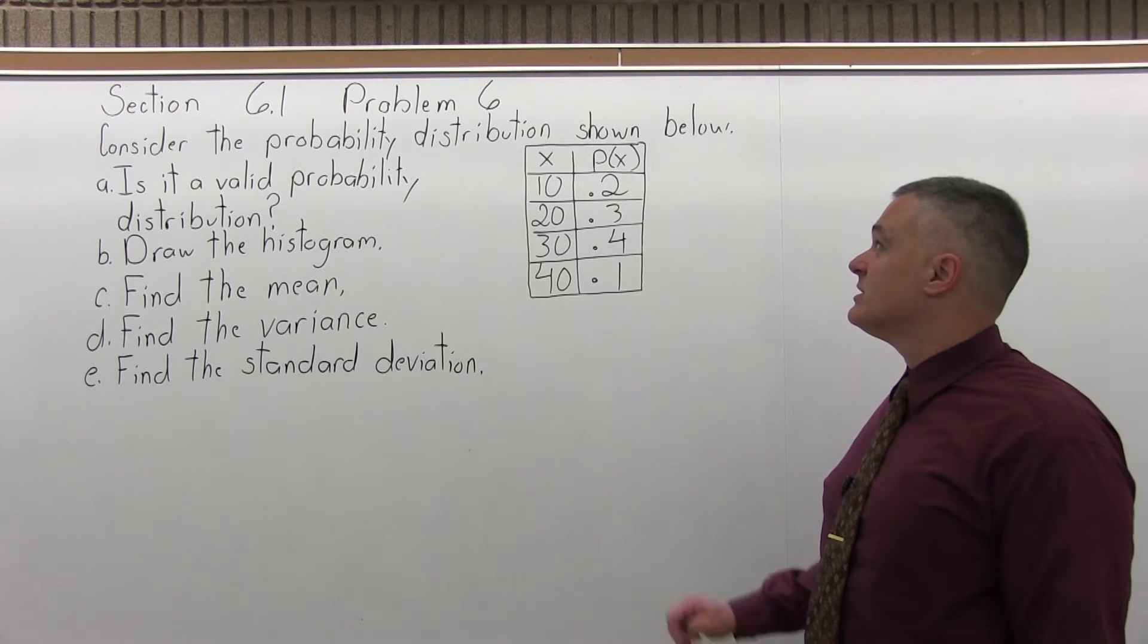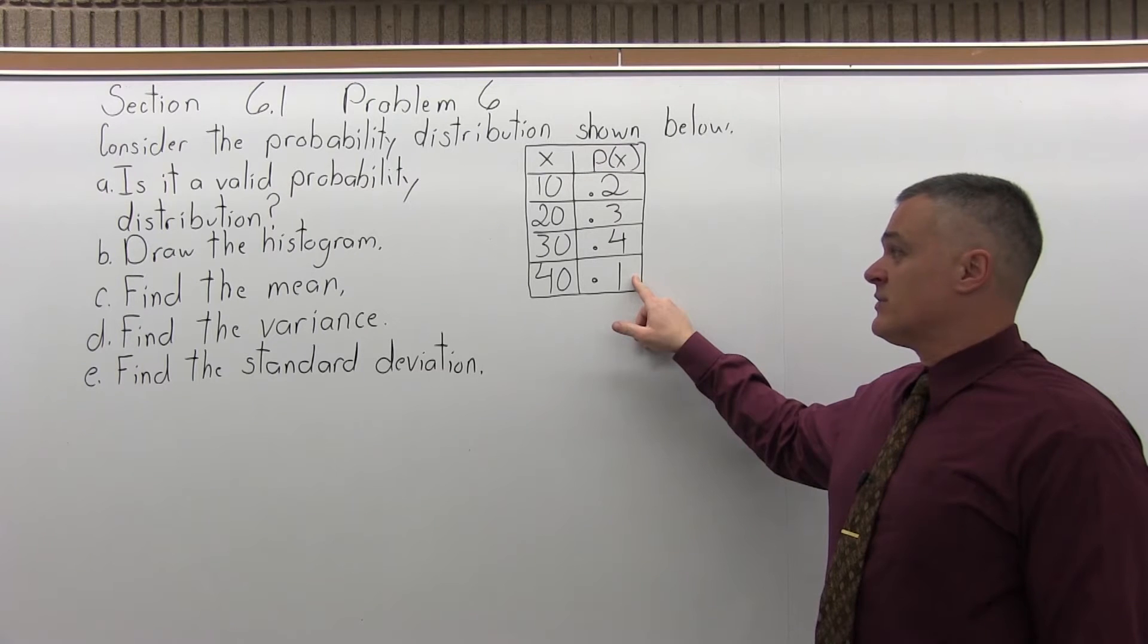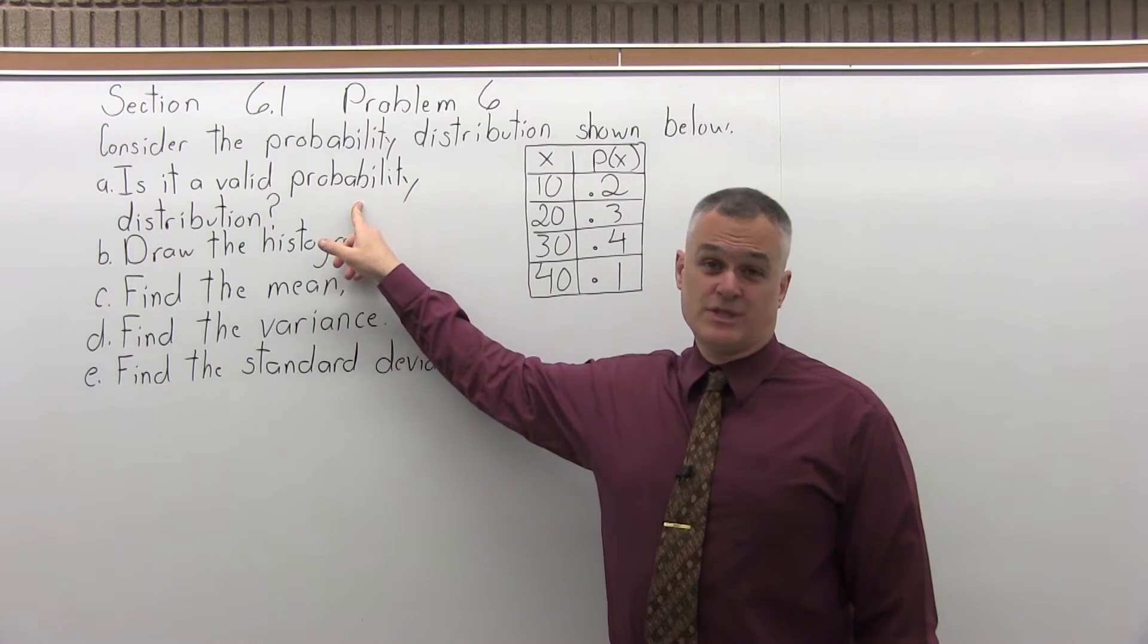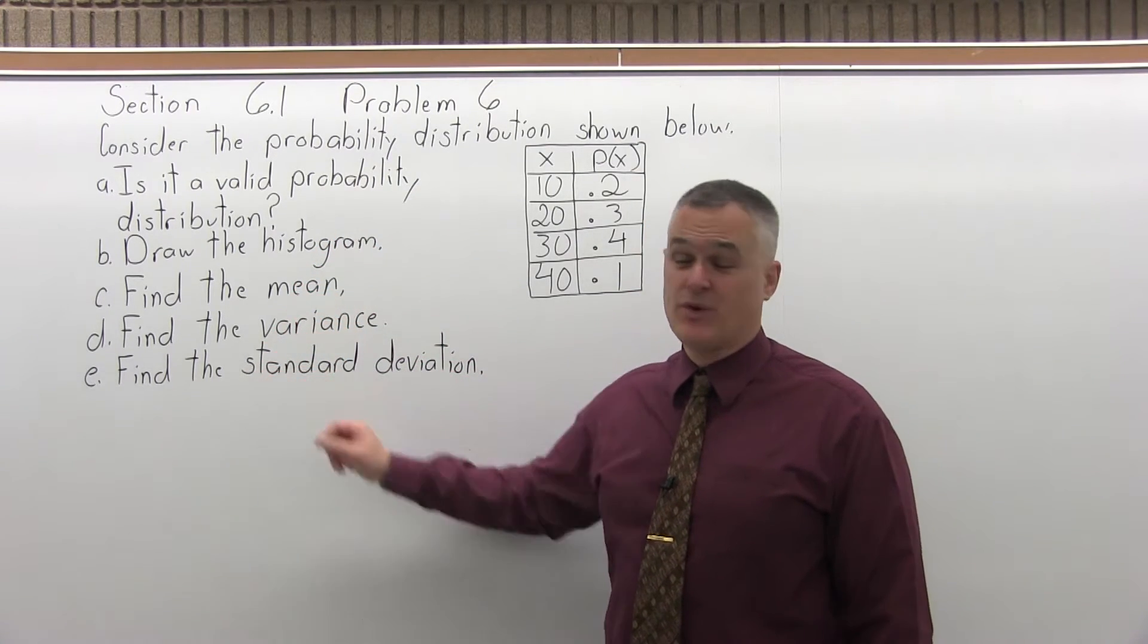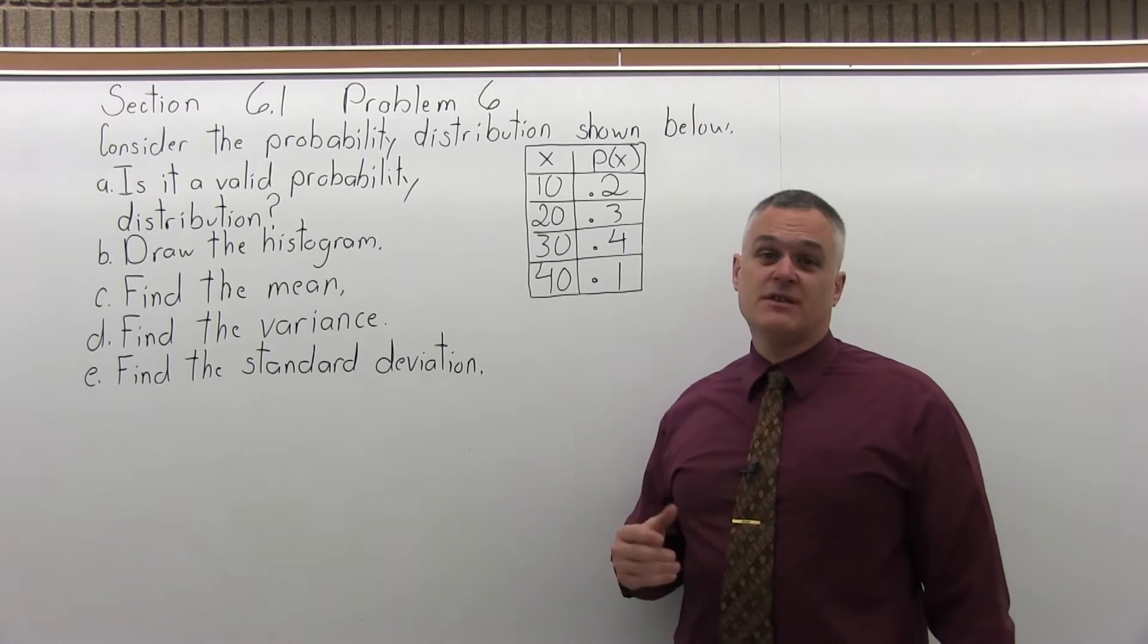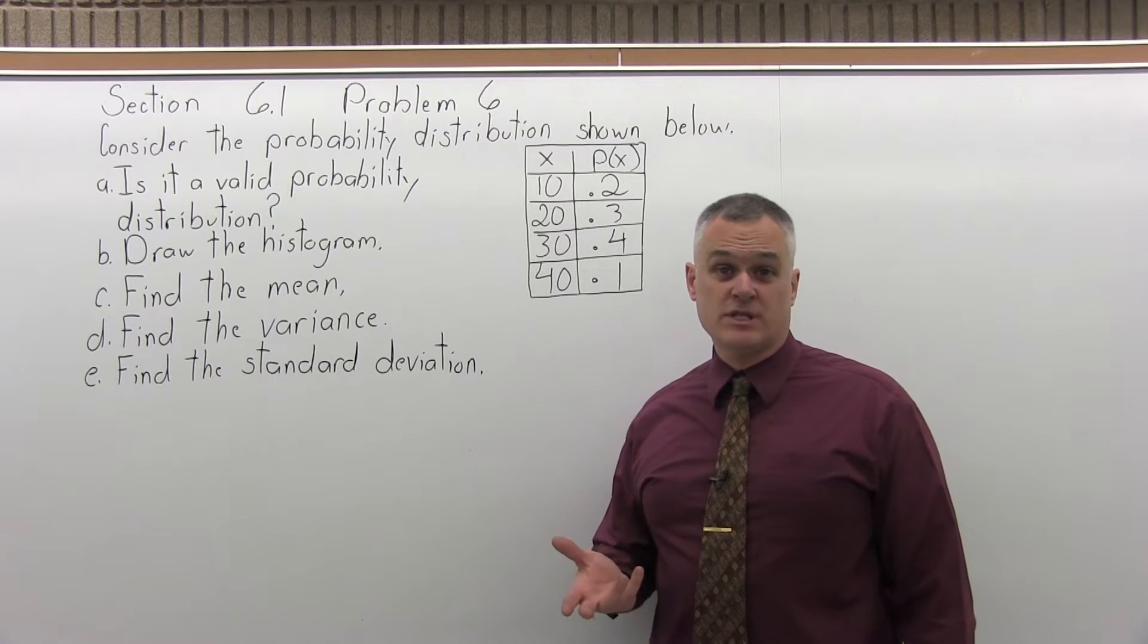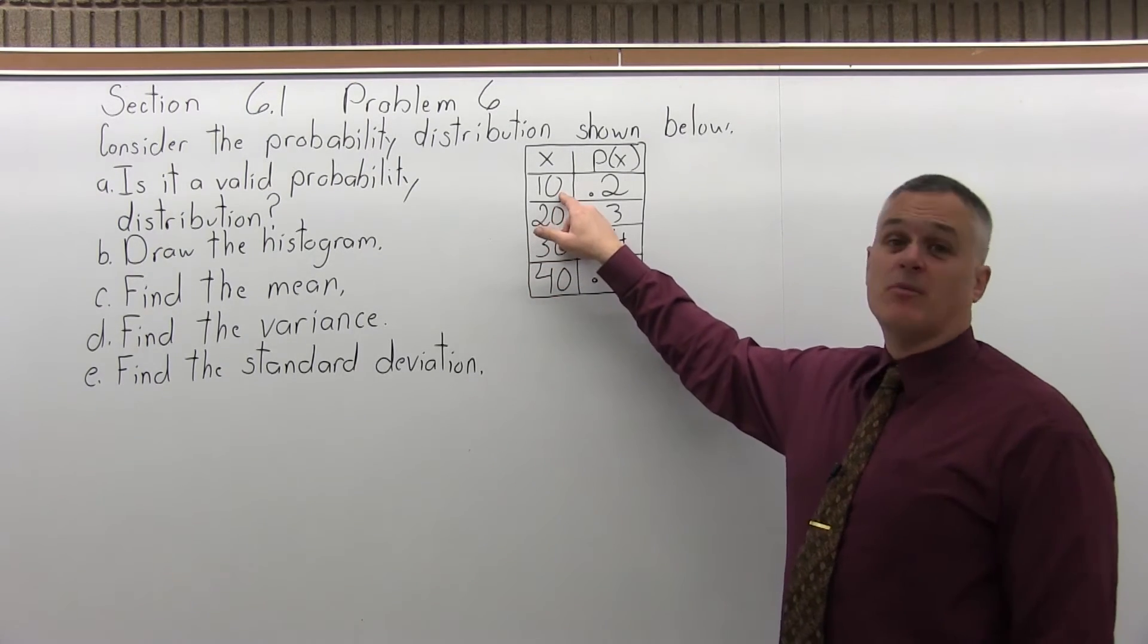It says, consider the probability distribution shown below, and we have a probability distribution here. The first question is, Part A, is it a valid probability distribution? And like the others before, the answer of course is going to be yes, because if it wasn't valid, you couldn't answer the other parts that follow it. So why is it valid? You have to see if all three of the requirements for probability distribution is satisfied, and it turns out they are. The first requirement is every value in the first column is a number. Well, that's okay.